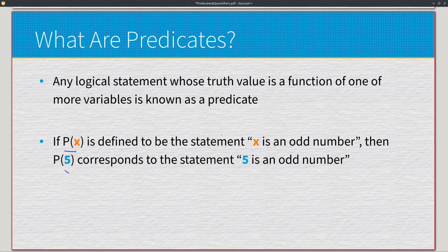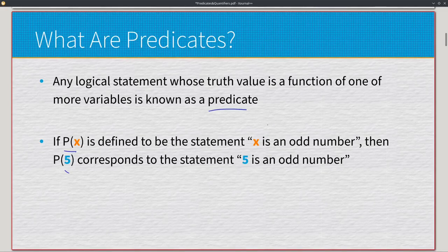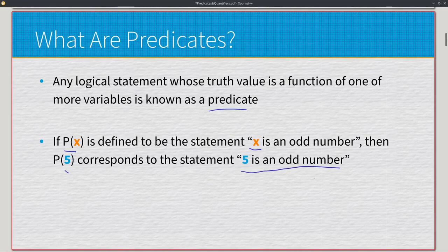Any logical statement whose truth value is a function of one or more variables is known as a predicate. If we have a statement with a variable like x, we can't determine if it's true or false — it has an unknown variable, so it's a predicate. If we plug in 5, like p(5), there's no longer an unknown aspect, so 'five is an odd number' is a proposition. As long as we account for all unknown values in a predicate, it becomes a proposition, and we can determine true or false.